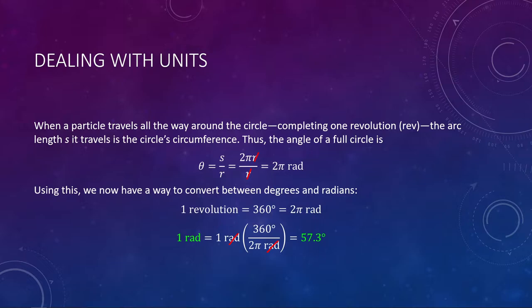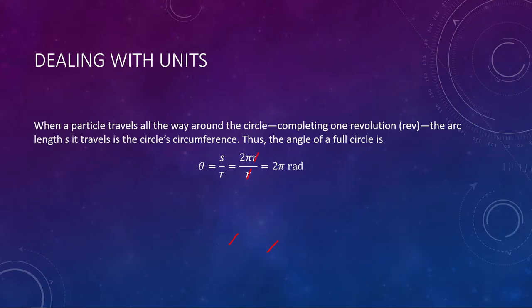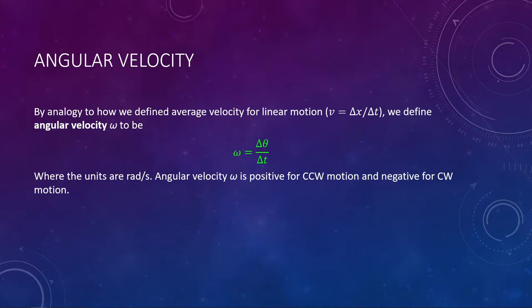We have now defined angular position — it's the angle that a particle sweeps out as it moves around in rotational motion. As it moves around, we can also define a new quantity: angular velocity. Angular velocity directly relates back to the old material on regular linear velocity, delta x over delta t. Now we have angular velocity omega — the Greek lowercase letter omega, a curly w. Omega equals delta theta over delta t instead of delta x over delta t.